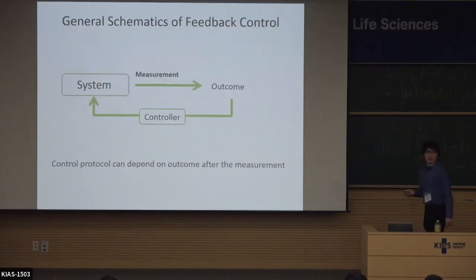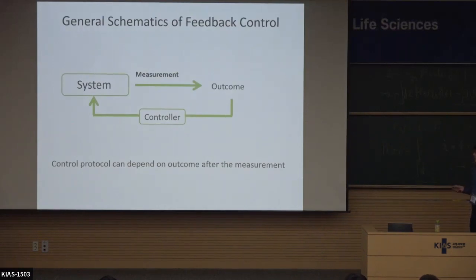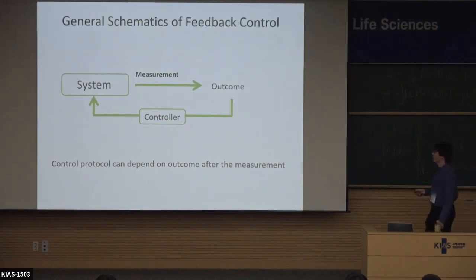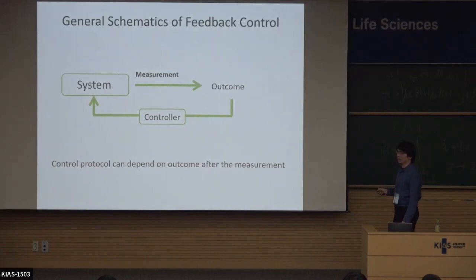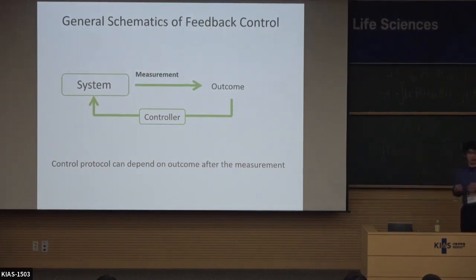Another important ingredient is feedback control. So there is a system and there is an outcome. After the measurement, that measurement outcome is used to control the system. This can be very general, and the only requirement is just causality — the measurement outcome is used only after the measurement. That is the only constraint.